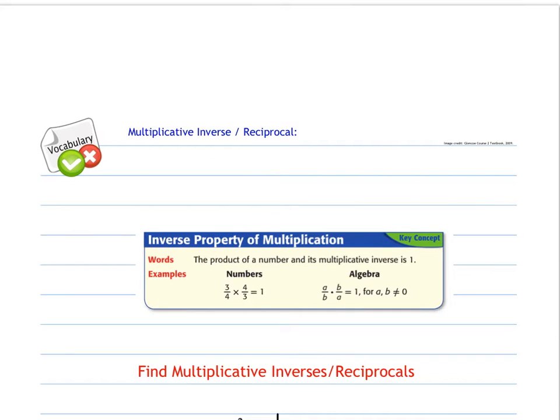A multiplicative inverse or reciprocal is a vocabulary word that you're going to need to know for this. I like to say re-flip-ricle, is how I remember it. And so that is kind of the opposite of a number or the inverse of a number. So for example, if I said six, the inverse would be one over six. So it's the re-flip or the flip of the number.